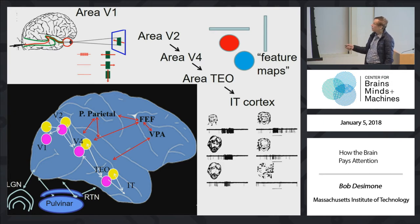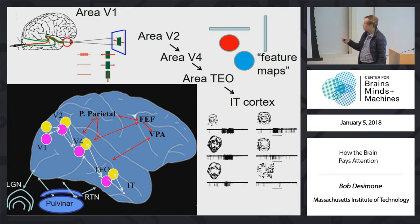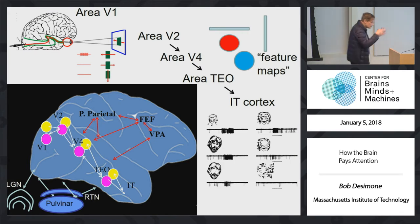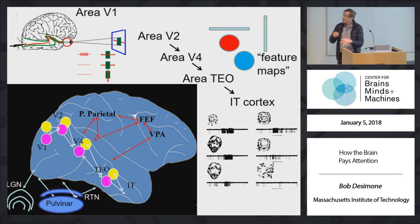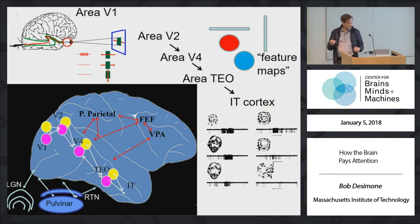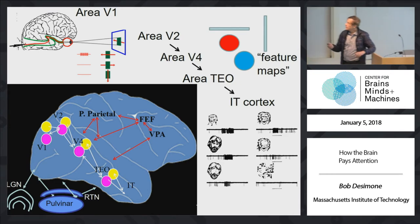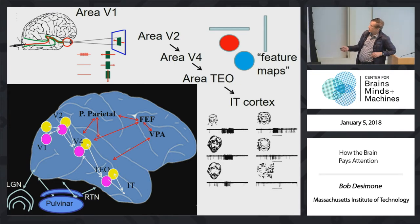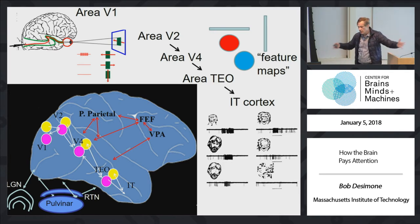By the time you get to the temporal cortex, you can even have cells that respond to very high-level complex objects like faces. In the primary visual cortex it may just be an oriented line, but in the temporal cortex you may have a cell responding to — that's Al Pacino. The receptive fields are also getting larger along the pathway — they're tiny pixel-like things back in primary visual cortex, but in IT cortex it could be the entire visual field.